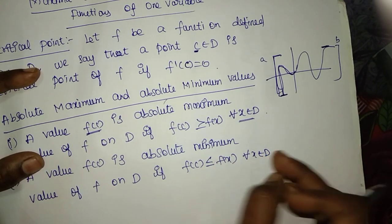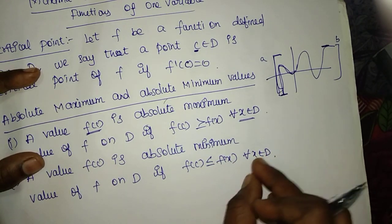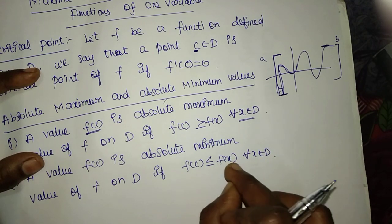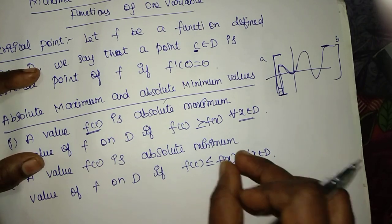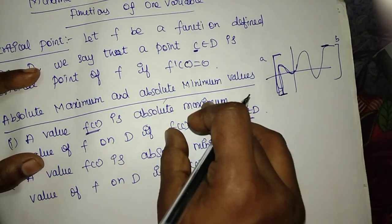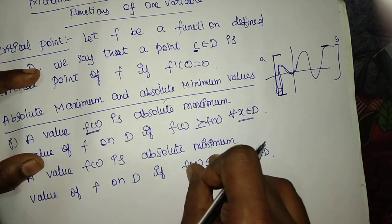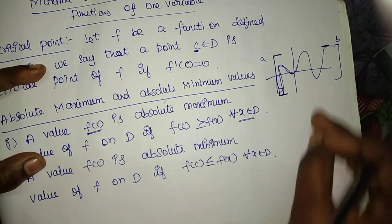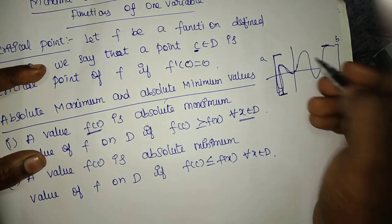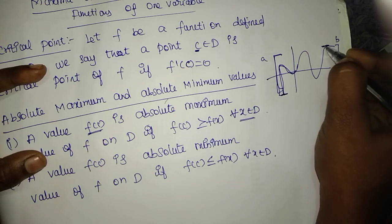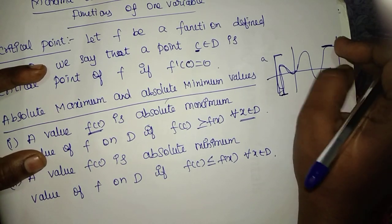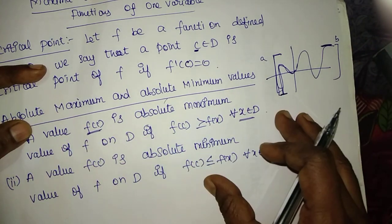If F of C is the minimum value, F of C belongs to D, and F of C is less than or equal to every F of X value. The maximum minimum is the absolute maximum, and the lowest value in the domain is the absolute minimum value. The maximum value reached is the absolute maximum value. That is the meaning.